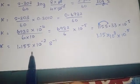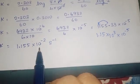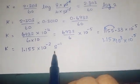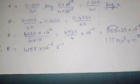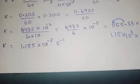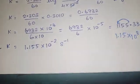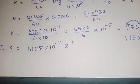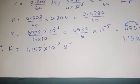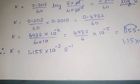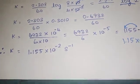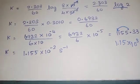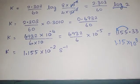The rate constant k is equal to 1.155 × 10⁻² s⁻¹, also written as 1.15 × 10⁻² second inverse. You must mention the unit second inverse — this is very important. This is the correct answer. Thanks for watching.